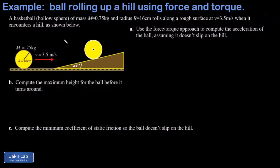In this video we're analyzing the motion of a hollow ball rolling up a hill using forces and torques. We've done this problem before using energy methods and were able to answer part B by computing the maximum height of the ball. Using force and torque allows us to get into all the details of the motion — finding acceleration at any moment and computing the minimum coefficient of static friction so the ball doesn't slip.